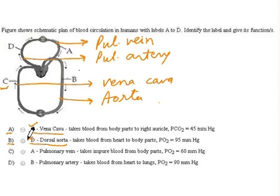Option C says A is pulmonary vein. In the figure also A is labeled as pulmonary vein, so this is a correct label.